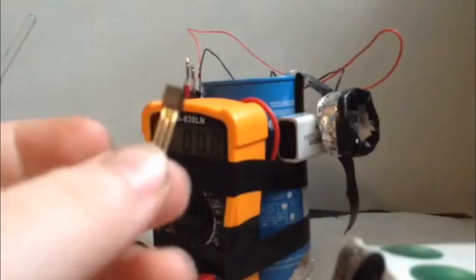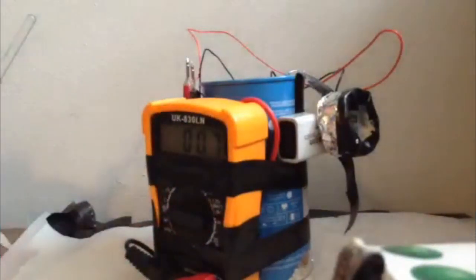Next you'll need a Darlington transistor. I would recommend a BC 517. You can find these on Amazon and eBay.